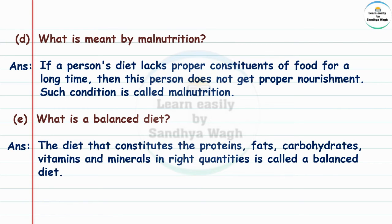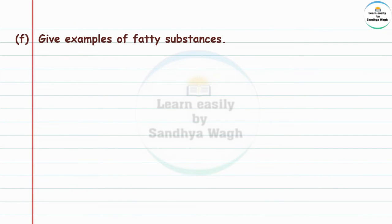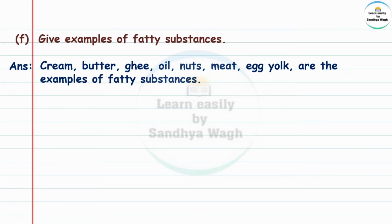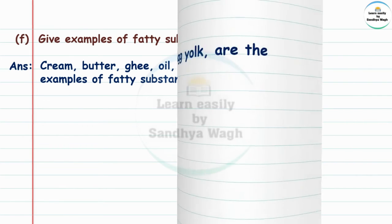Question 5e: What is a balanced diet? Answer: The diet that contains proteins, fats, carbohydrates, vitamins and minerals in right quantities is called a balanced diet. Give examples of fatty substances: cream, butter, ghee, oil, nuts, meat, and egg yolk are examples of fatty substances.